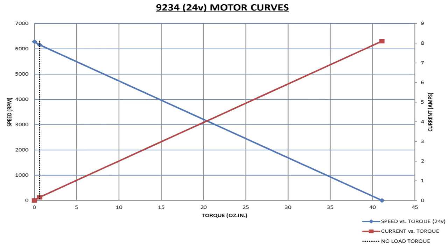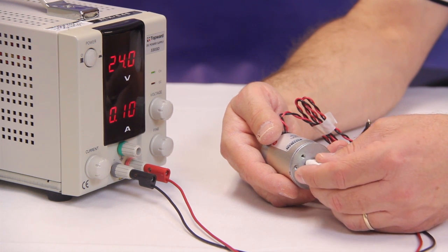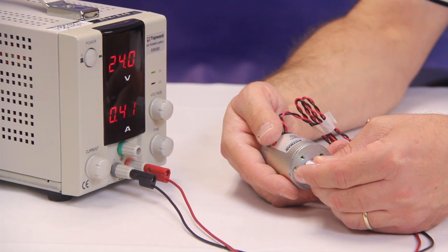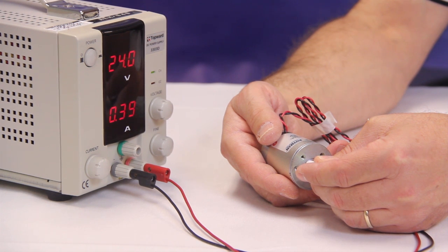Here on our chart, we see a dotted line that defines this motor operating at no load. If I grab the shaft and impart a torque load to the motor, you can see the effects. The motor speed slows down and in an attempt to compensate it draws more current.